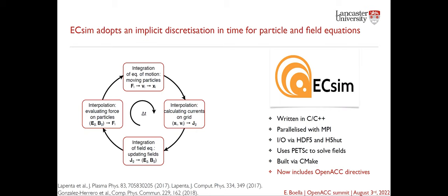The peculiarity of AXIM is that it adopts an implicit discretization in time for particles and field equations. The code is written in C++, parallelized via MPI, with I/O done through HDF5 and H5hut, and we use PETSc to solve the field equations. The Maxwell equations are discretized implicitly in time, meaning we have a linear system to solve and we use GMRES from PETSc. AXIM is built with CMake and now includes OpenACC directives.